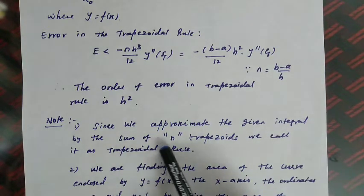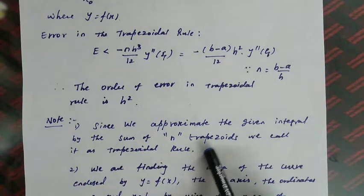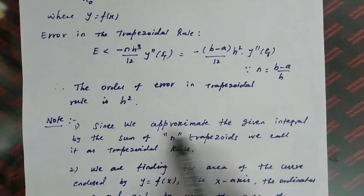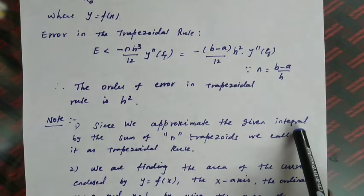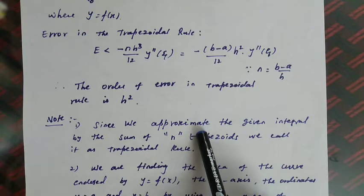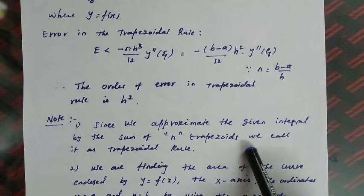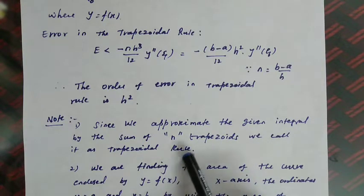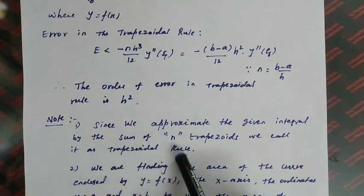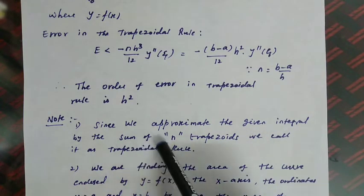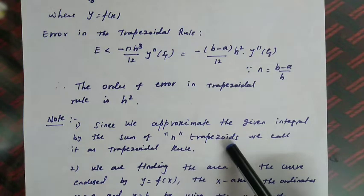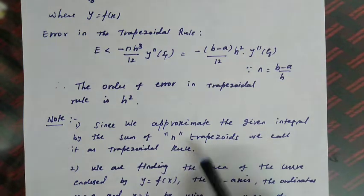We are approximating the given integral — getting an approximate value by the sum of n trapezoids — and that is the reason why this rule is called the trapezoidal rule. A possible exam question is: 'Why is the trapezoidal rule so called?' The answer is: because we get the integration value as the sum of n trapezoids.